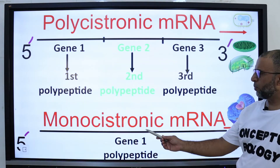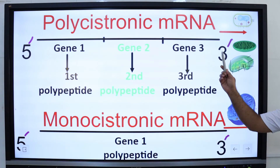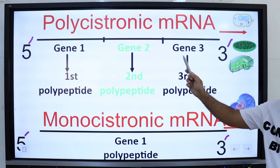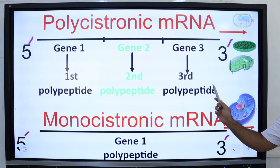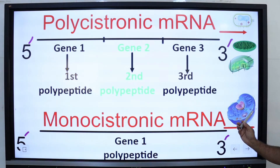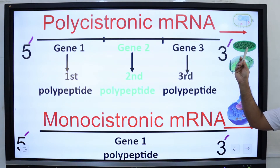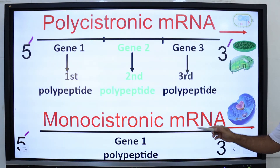Prokaryotes are not able to pick and choose to express only certain protein products on messenger RNA. On the other hand, monocistronic mRNA produces a single protein, while polycistronic mRNA produces several proteins, but these proteins are functionally related. In eukaryotic cells, messenger RNA produced by chloroplasts and mitochondria are also polycistronic.